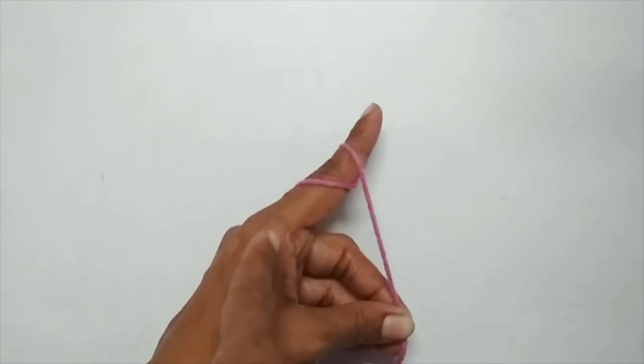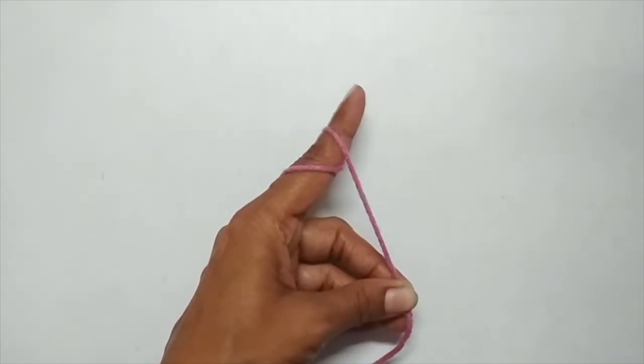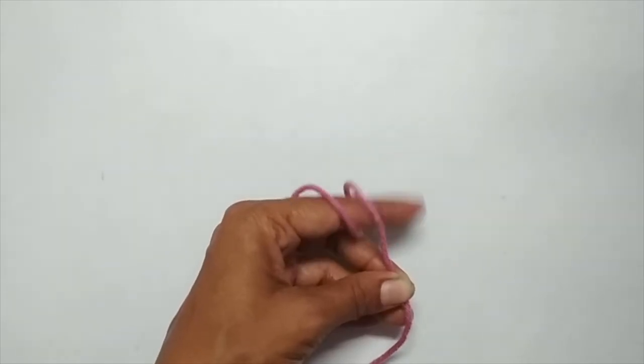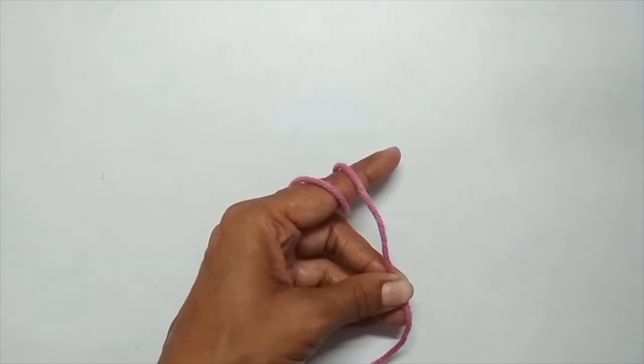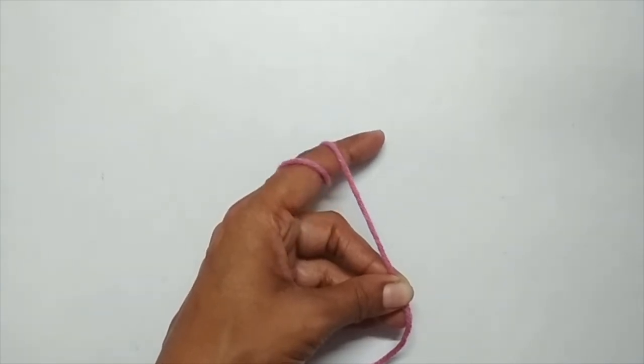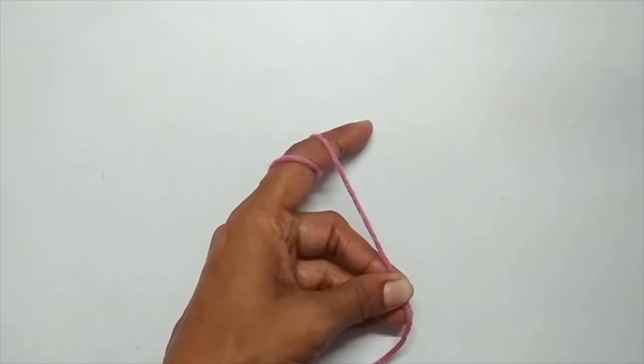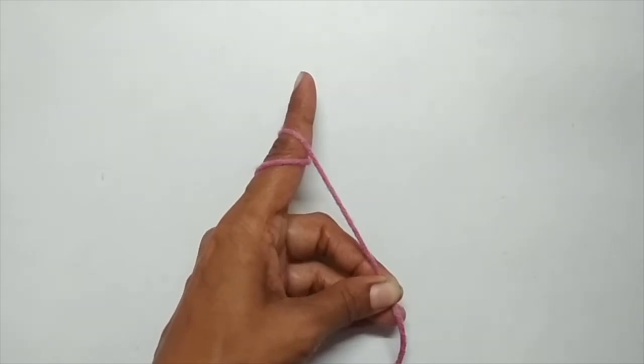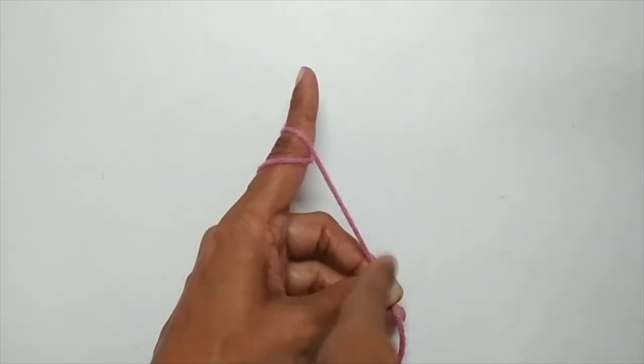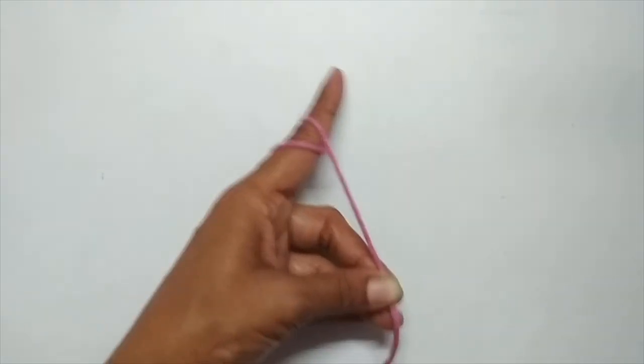When you are holding your yarn like this, make sure that your pointing finger is pointed up and straight. If it comes like this between your workspace, you can see that there is no tension here, so the stitches that you make will not have proper tension—it might be very loose or sloppy kind of stitches. So whenever you are holding your yarn, make sure that it is straight and stiff and doesn't come between the workspace area. So this is one way of holding yarn.